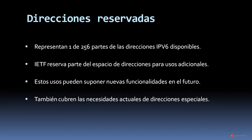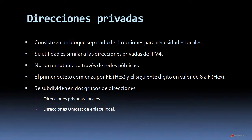Al igual que en IPv4, también vamos a encontrar direcciones reservadas en IPv6. Estas representan una de 256 partes de las direcciones IPv6 disponibles. El IETF (Internet Engineering Task Force) reserva parte del espacio de direcciones para usos adicionales, que pueden suponer nuevas funcionalidades en el futuro y cubren las necesidades actuales de direcciones especiales. Las direcciones privadas forman un bloque separado para necesidades locales, con una utilidad muy similar a las direcciones privadas de IPv4. No son enrutables a través de redes públicas. El primer octeto comienza por FE en hexadecimal y el siguiente dígito es un valor de 8 a F.